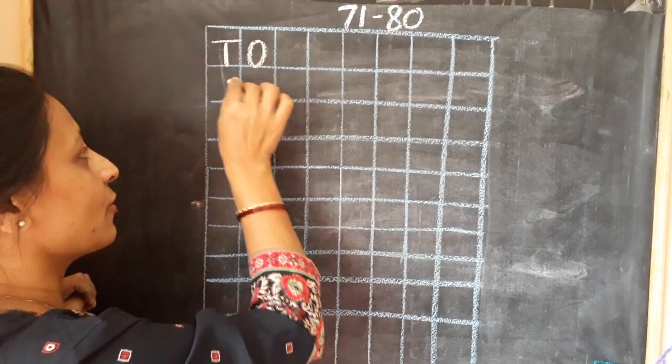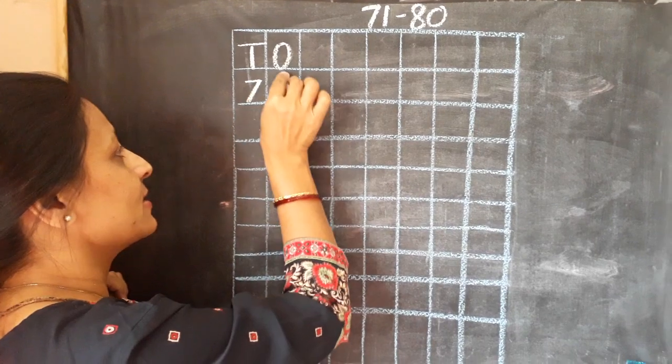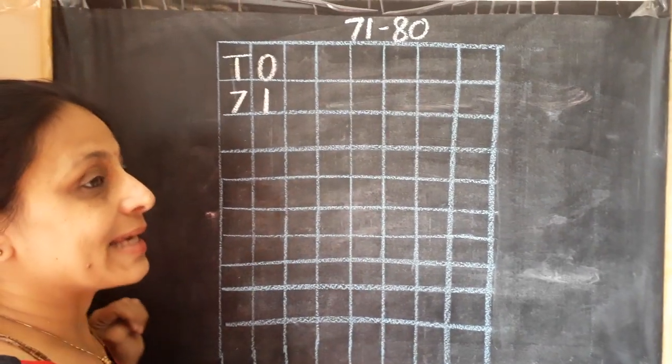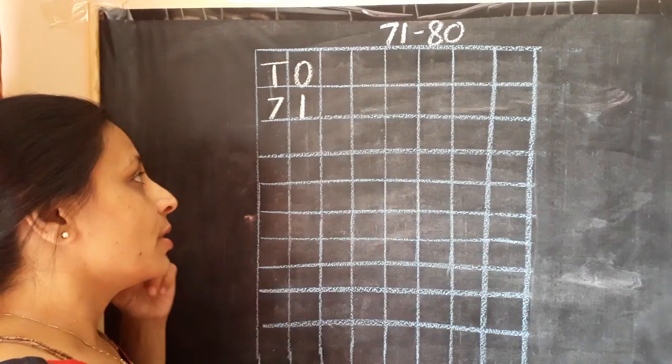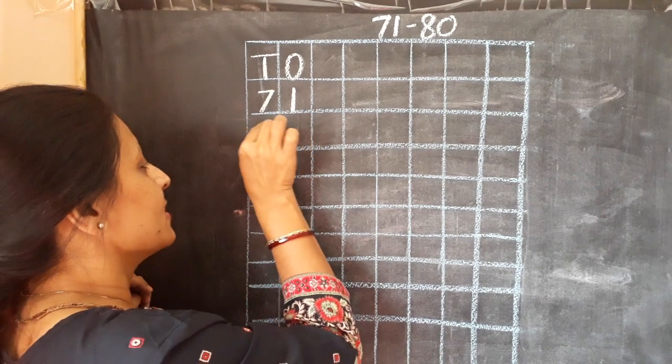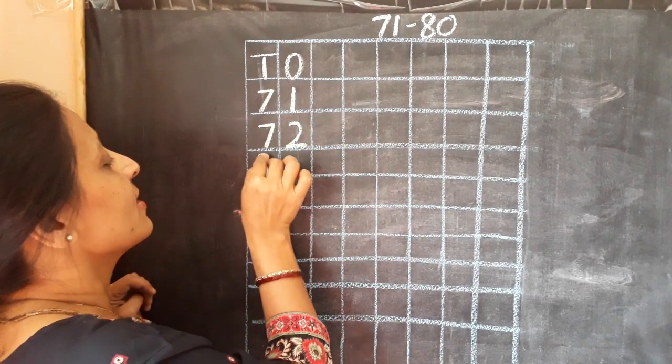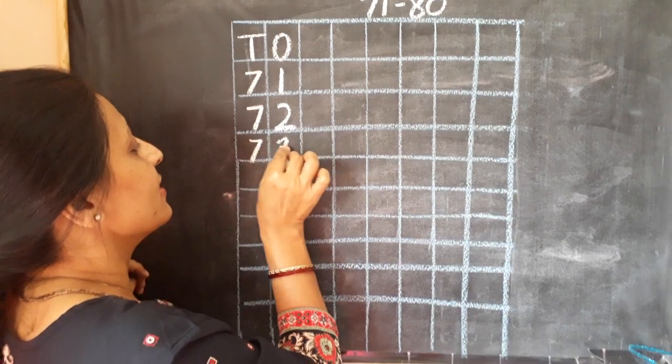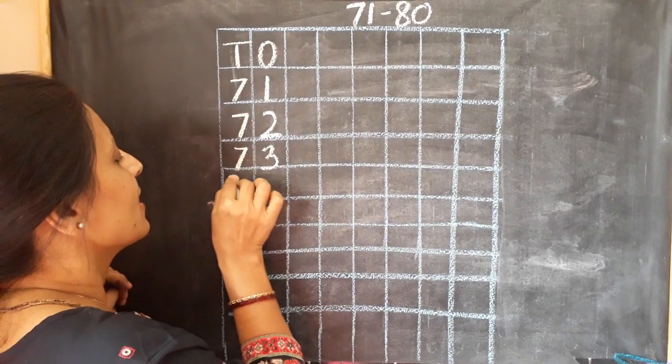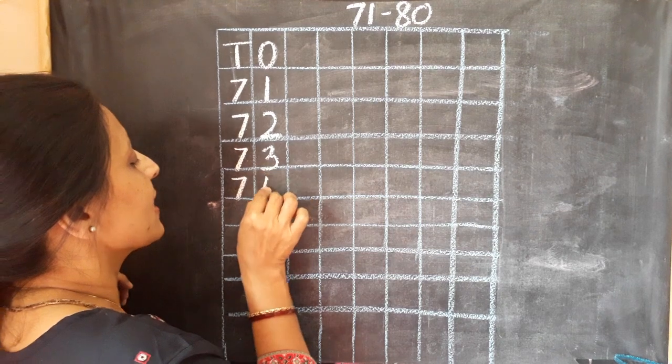Now, first of all, I will write 71. Whenever we say the number, you are going to repeat after me. 72, 72. 73, 73. 74, 74.